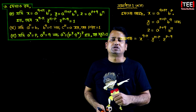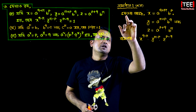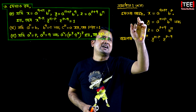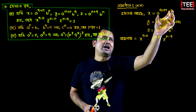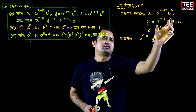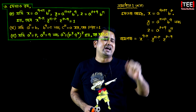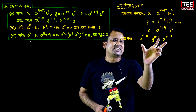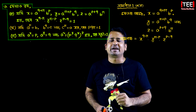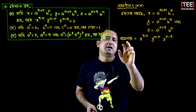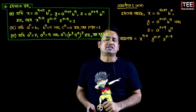Now, part 3 is 2, which shows x equal to this, and y equal to this, and z equal to this, at the same time.